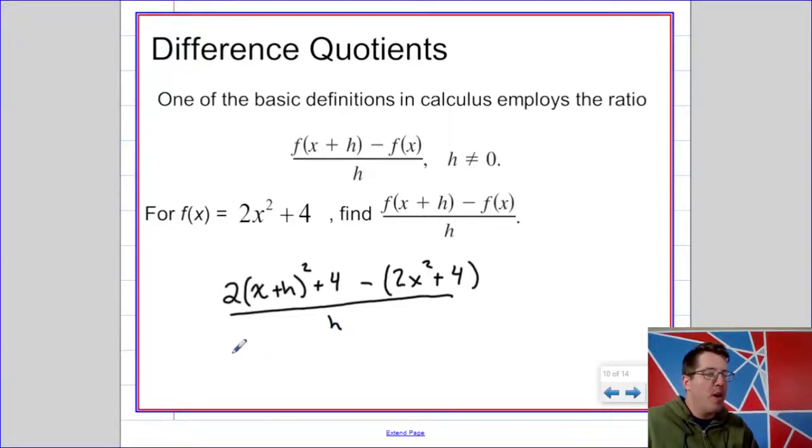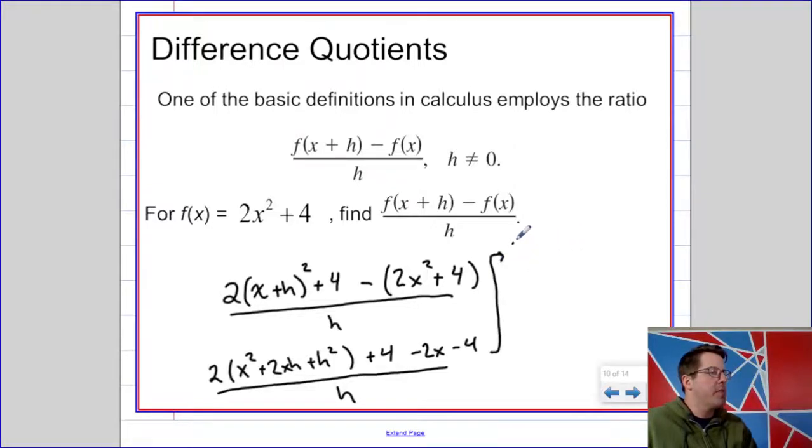So this is going to get a little bit more complicated because we've got x squared plus 2xh plus h squared plus 4. And then we're going to subtract 2x squared and 4. Sorry, 2x squared.